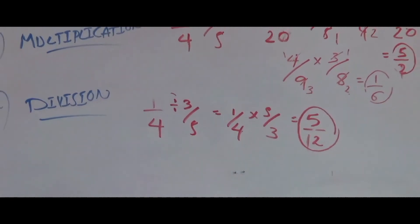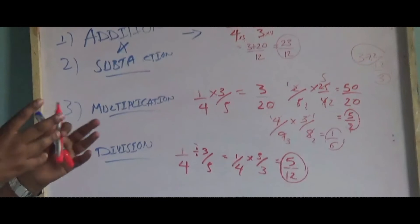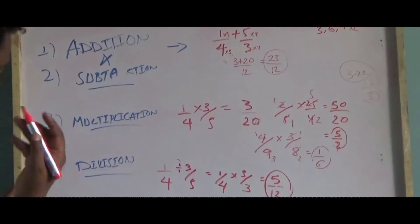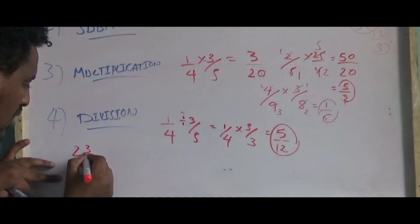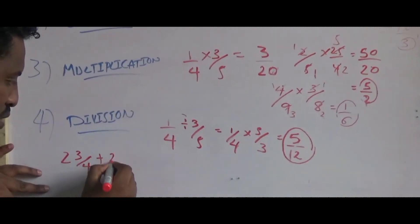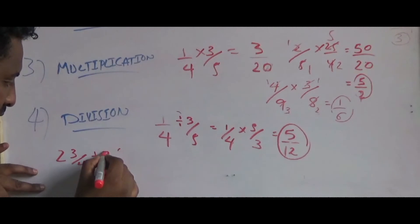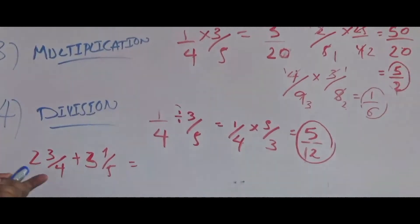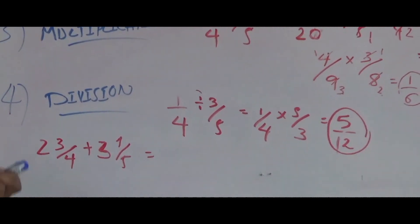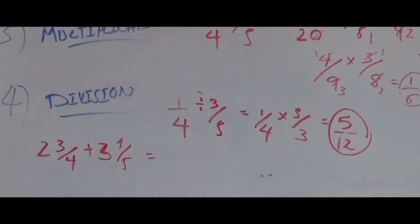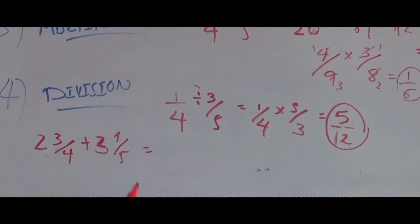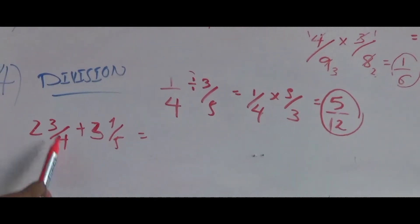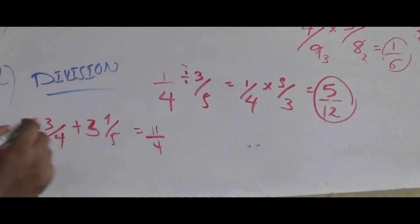Any mixed fraction number — for example, 2 whole and 3 over 4, plus 3 whole and 1 over 5. You release the mixed number and convert it to an improper fraction. 2 times 4 is 8, plus 3 is 11, so 11 over 4. And 3 times 4 plus 1 gives 13 over 4.